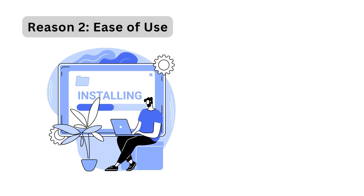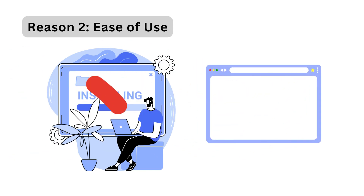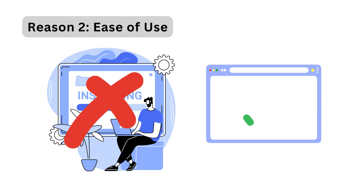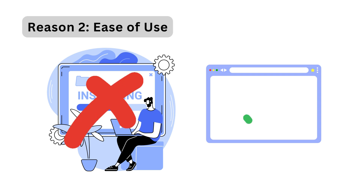Reason 2: Ease of use. Forget complex setup procedures. With Google Collab, everything runs in your browser, allowing you to focus on coding instead of dealing with installation issues. The cloud-based nature ensures flexibility, letting you work from anywhere with internet access.